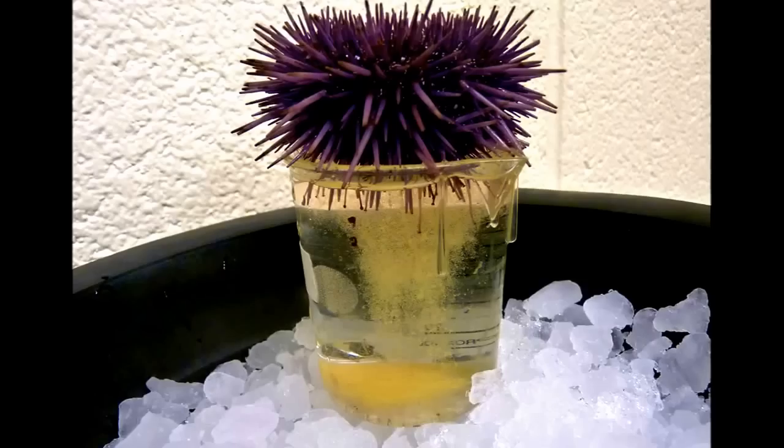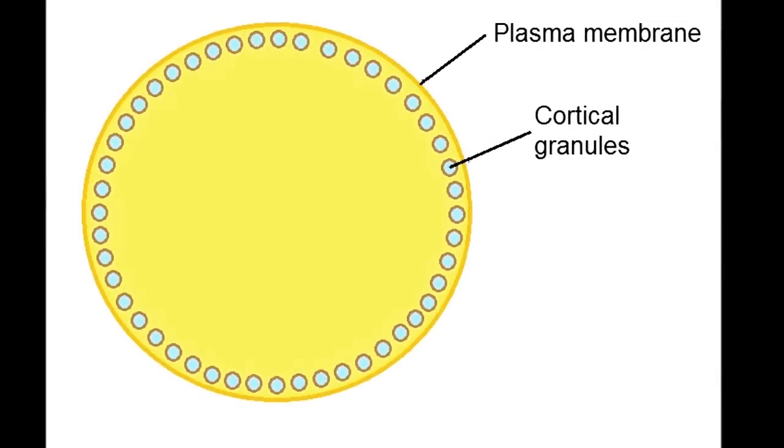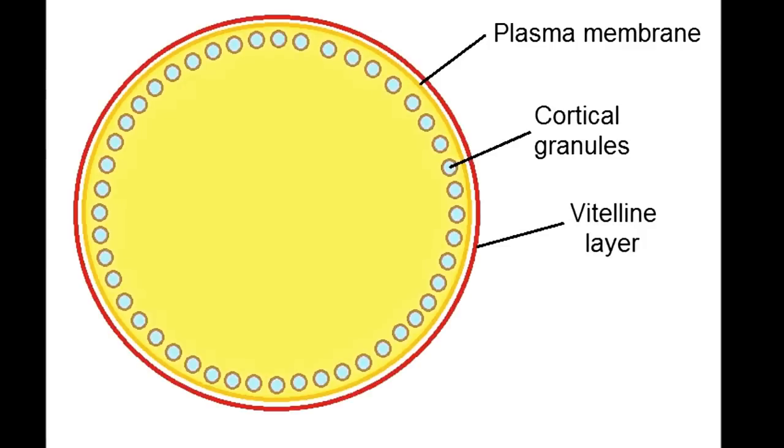The high yolk content gives the egg its yellow color. Another difference between the egg and any other cell is that it contains special cortical granules just below the plasma membrane. Also, there is a special vitelline layer that is initially attached to the plasma membrane.